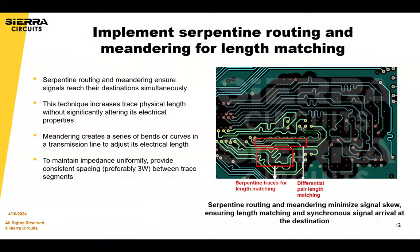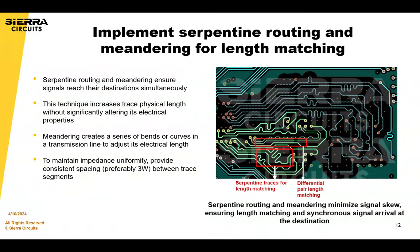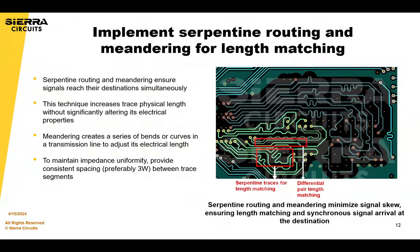One technique is serpentine routing and meandering for length matching. Serpentine routing and meandering techniques ensure signals reach their destination simultaneously. Serpentine routing involves guiding a trace in a back-and-forth snake-like pattern across the PCB, increasing the physical length of the trace without significantly altering its electrical properties. Meandering creates a series of bends in a transmission line to adjust its electrical length, helping fine-tune the signal's timing and phase characteristics. To achieve impedance uniformity, consistent spacing between trace segments — preferably three times the trace width — is essential.